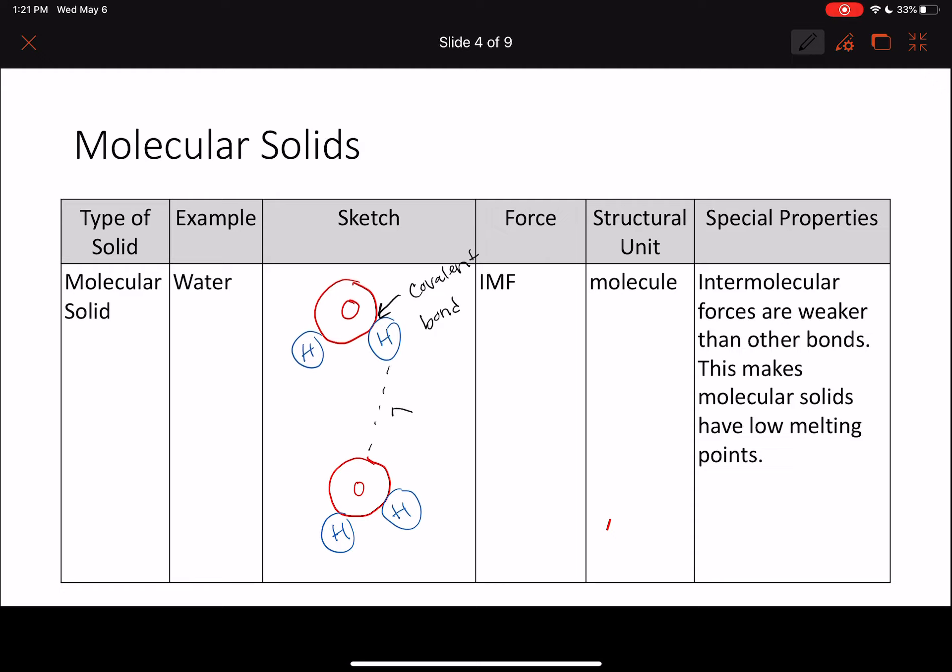It's actually going to be this intermolecular force. In this case, of water, it's hydrogen bonding. So the force that actually is holding together this molecular solid is an intermolecular force. The smallest unit of this molecular solid is this one molecule of water. Since molecular solids are held together by intermolecular forces, intermolecular forces are weaker than other bonds, and that means molecular solids have lower melting points than other types of solids.